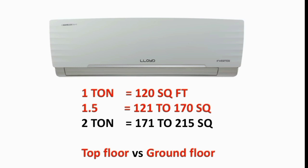This is the first factor. The second factor is 100 square feet room size. If you are on the third floor or the top floor, then you will need a 1.1 ton AC. If the top floor is open or exposed, you should choose a 1.5 ton AC for better performance.